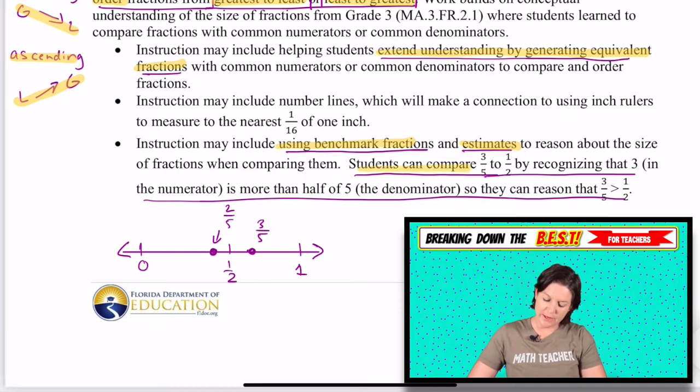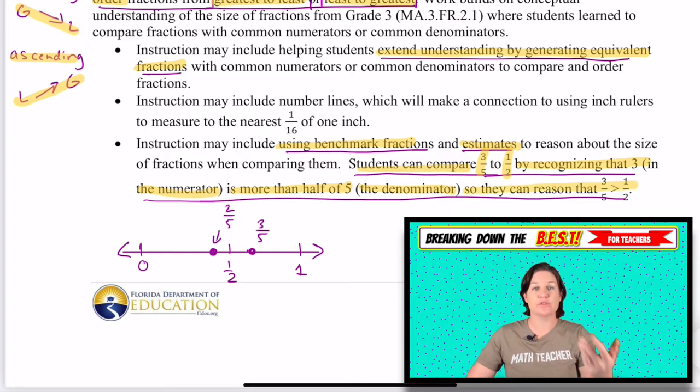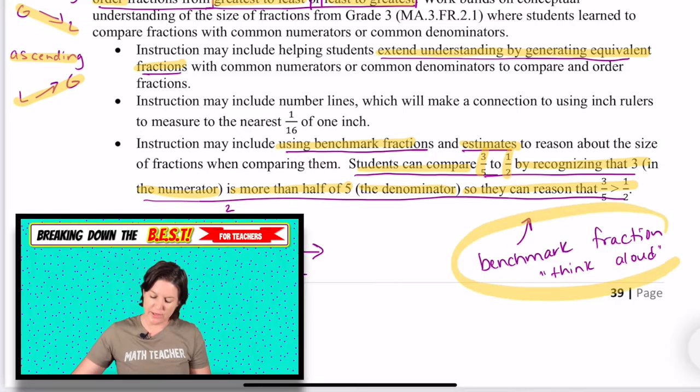For instance, students can compare three fifths to one half by recognizing that three in the numerator is more than half of five, the denominator. So they can reason that three fifths is greater, slightly greater than one half. This is a great way, just an example of a benchmark fraction, think aloud right there. So I just made that little note.